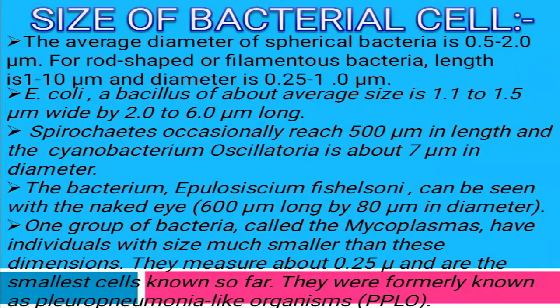The average diameter of spherical bacteria is 0.5 to 2 micrometers. Rod-shaped bacteria have a length of 1 to 10 micrometers and a diameter of 0.25 to 1 micrometer. If we talk about E. coli, which is a bacillus, its average size is 1.1 to 1.5 micrometers wide and 2 to 6 micrometers long.